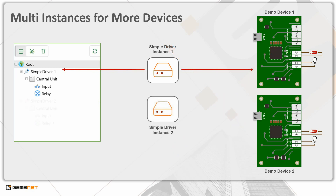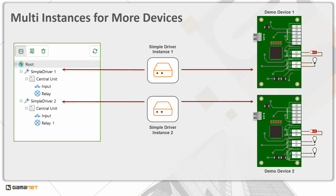In the C4 system, each instance of the driver has separately defined configuration of the device that it manages. This configuration contains all subsystems of the particular device. Therefore, if we have two devices that differ in configuration — as we can see in our case — one device has one output and the other has two outputs, their trees in the C4 system will also differ.